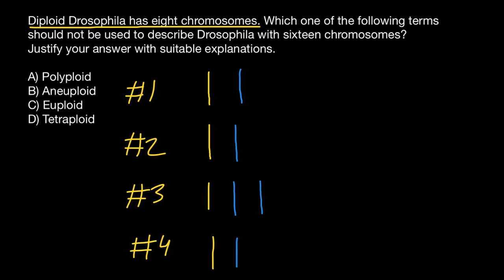There can also be a different condition: from the father's side, the organism may miss one chromosome. In this case we say it is monosomy of chromosome number two. Both of these examples — trisomy and monosomy — are examples of aneuploidy, which means an abnormal number of chromosomes.